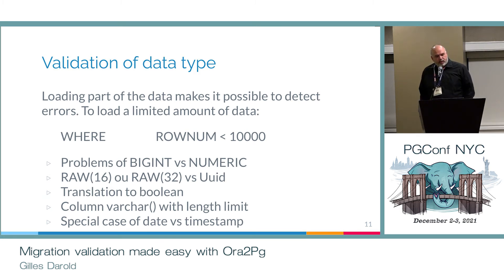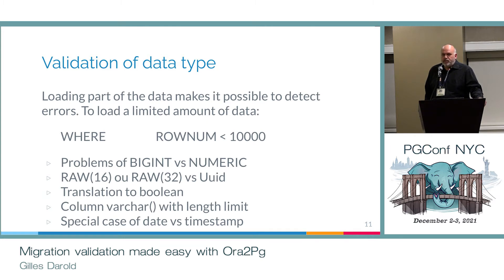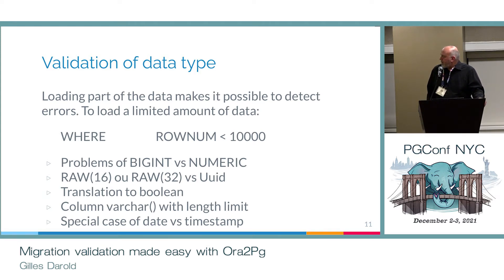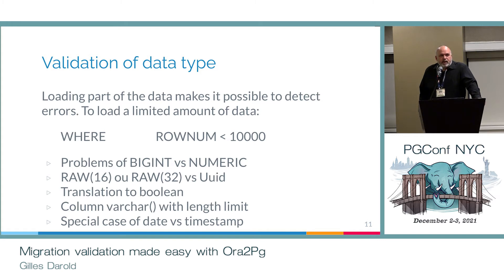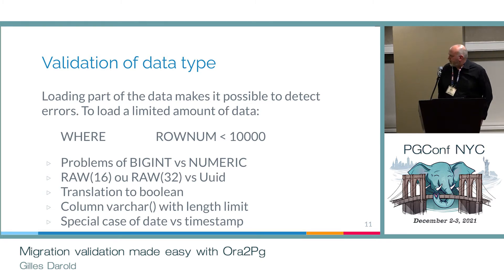Another important part is to validate all your data types when you migrate the table from Oracle. There is no easy way to do that unless trying to import all the data into Postgres — all or a part of the data — which will return an error if you have the wrong data type. This is possible with ORA2PG: you can choose to import let's say 2,000 or 100,000 rows into Postgres to validate that you have the right data type. Most of the time the problem comes from number-to-numeric transformation.